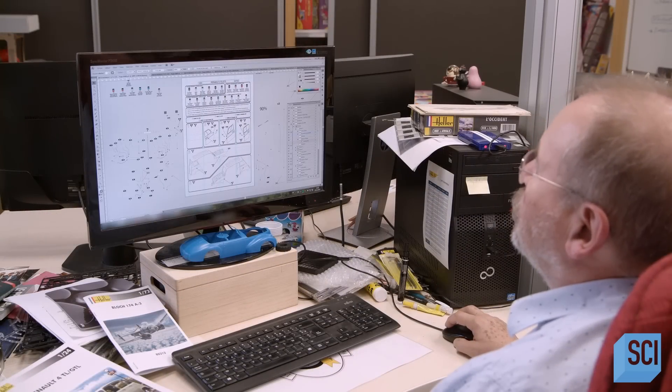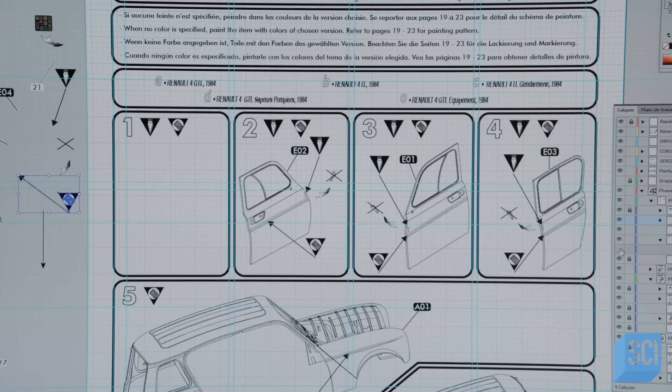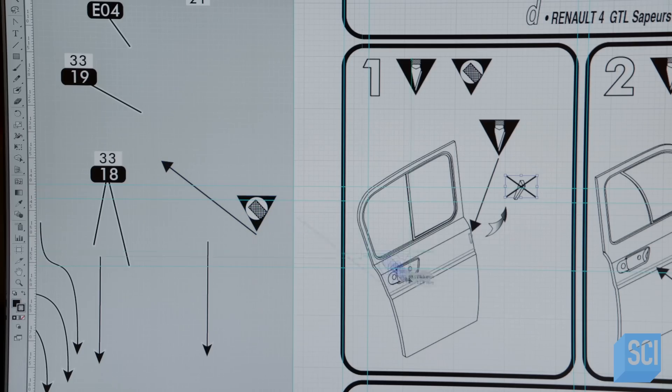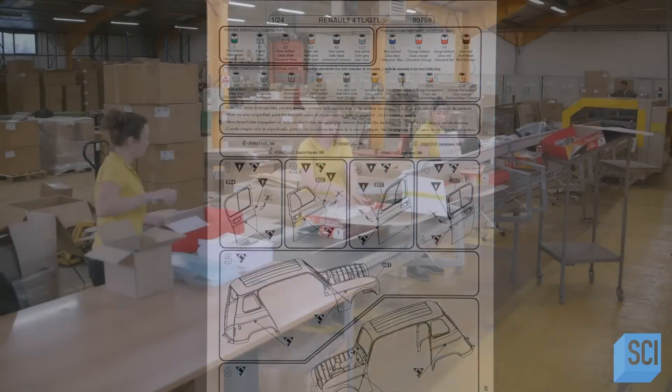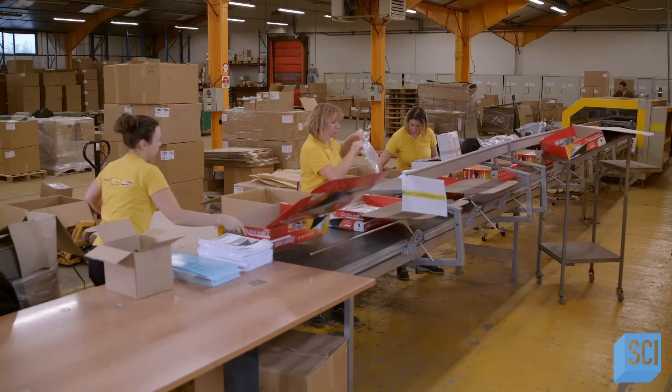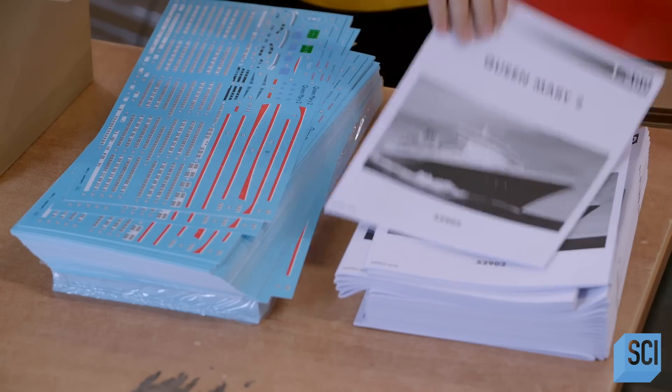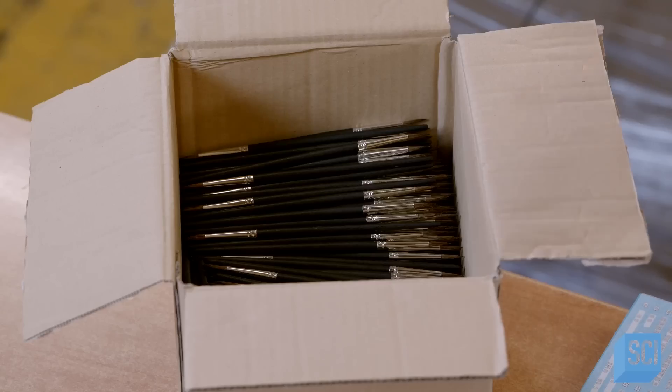Before it's ready for retail, the kit needs a set of illustrated instructions. The designer deconstructs the model and then reconstructs it on his computer as he draws up the instructions. With the instruction manual complete, a team packs all the components of the model kit in a box.